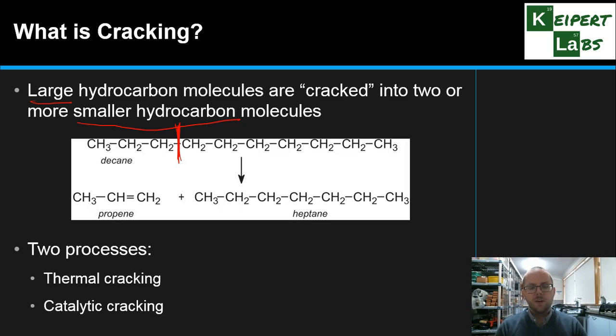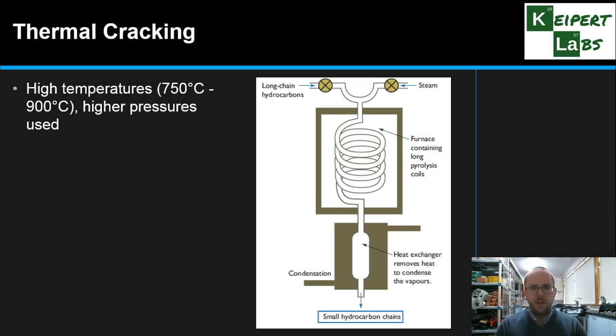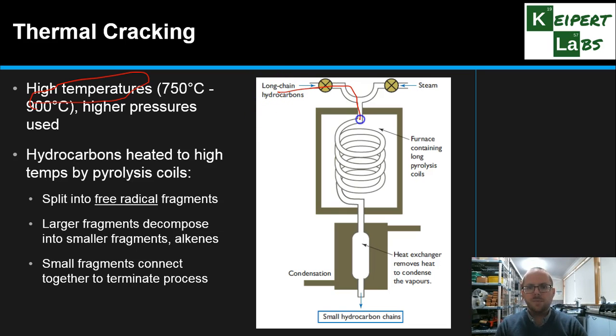Now there's two main processes that we would use in cracking. We talk about thermal and catalytic cracking. So thermal cracking, with the diagram that you see on the right there, as the name would suggest, is we've got high temperatures, 750 to 900 degrees Celsius, and also higher pressures than atmospheric. So we take our long chain hydrocarbons, which are longer than we need, and they are pumped in here, and they make their way down to these pyrolysis coils. You might remember that pyrolysis is heating in the absence of air, which makes sense when we think about heating very flammable and explosive compounds, we need to exclude the oxygen.